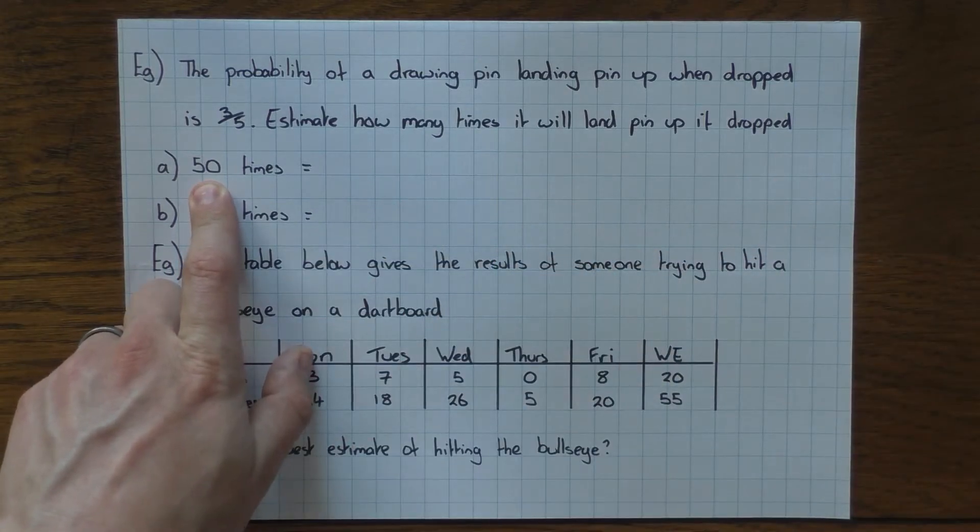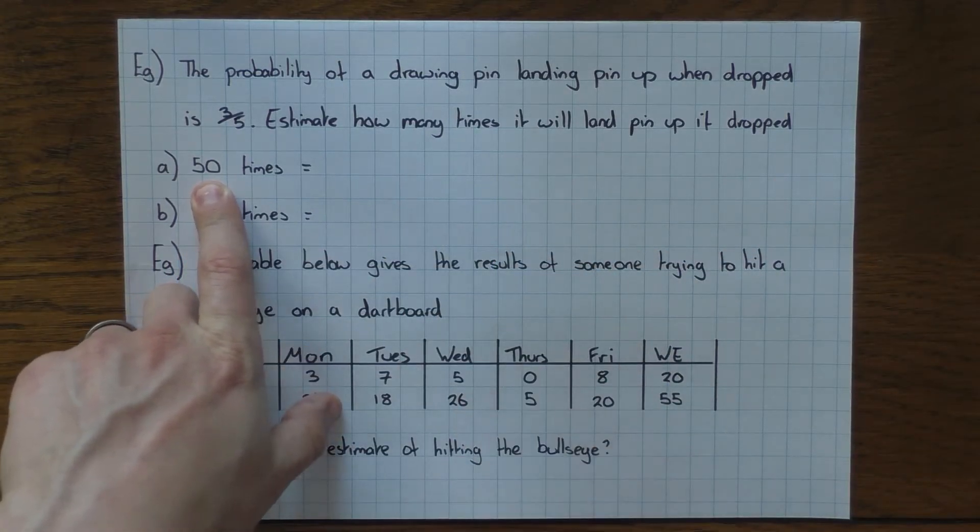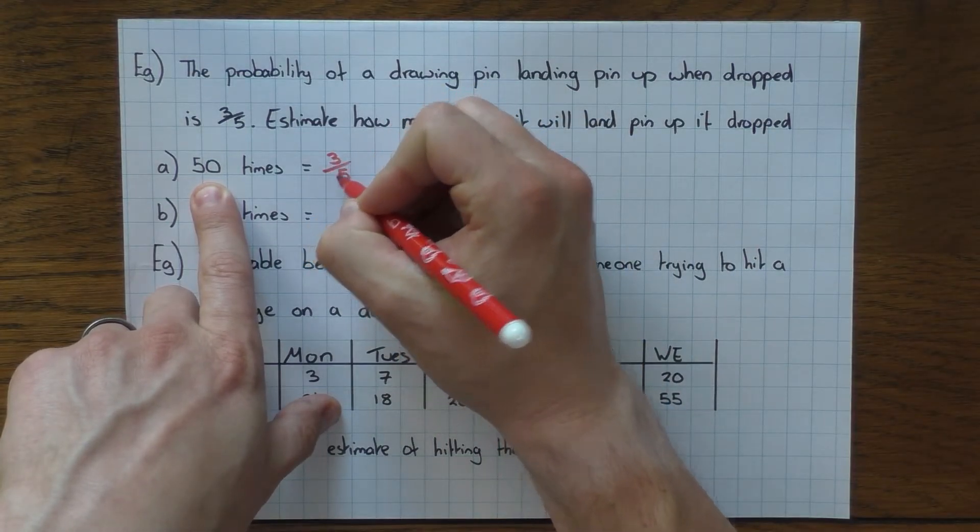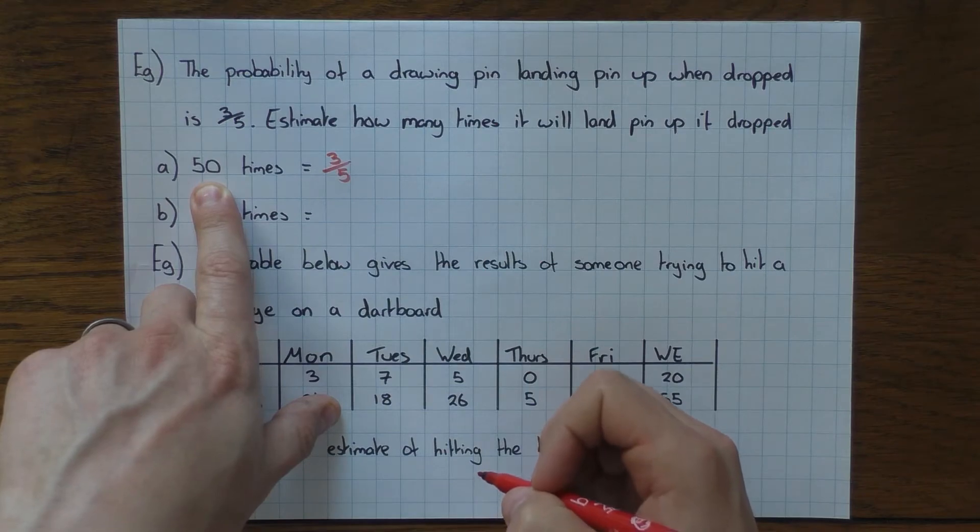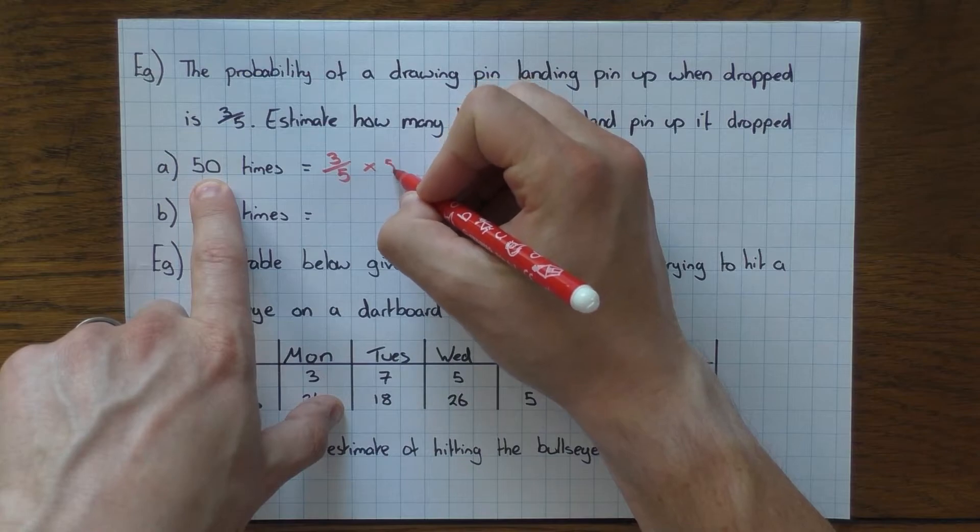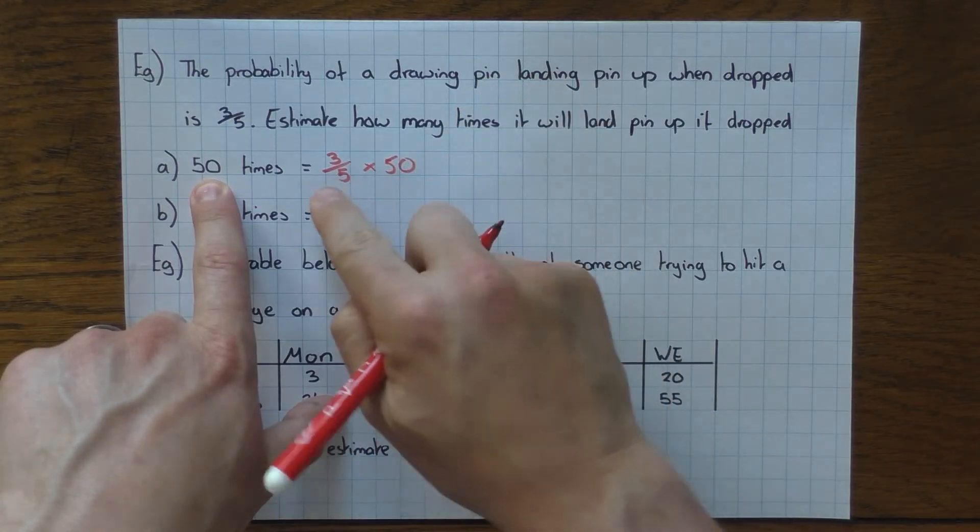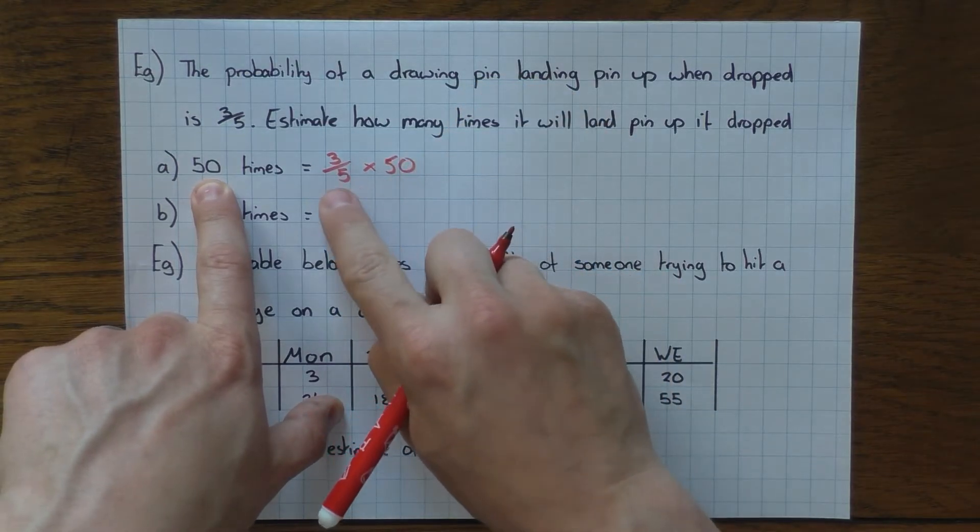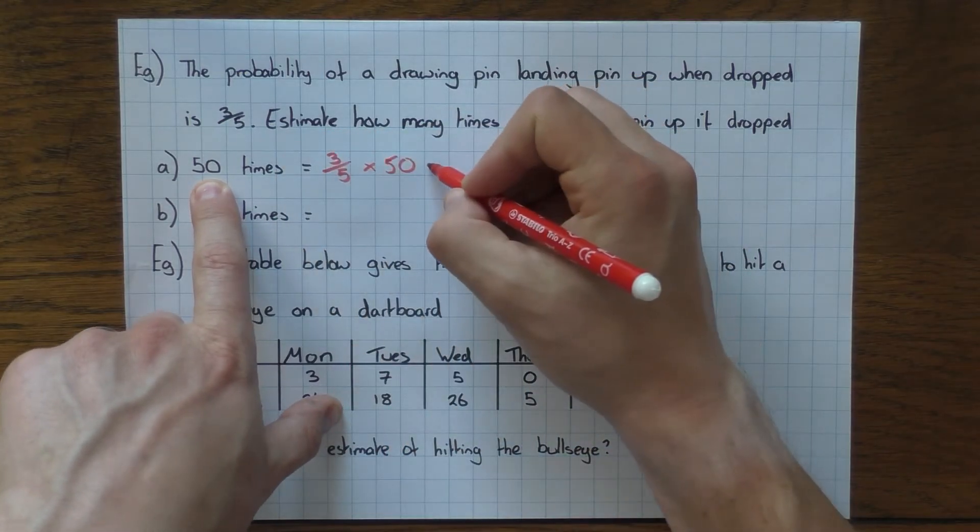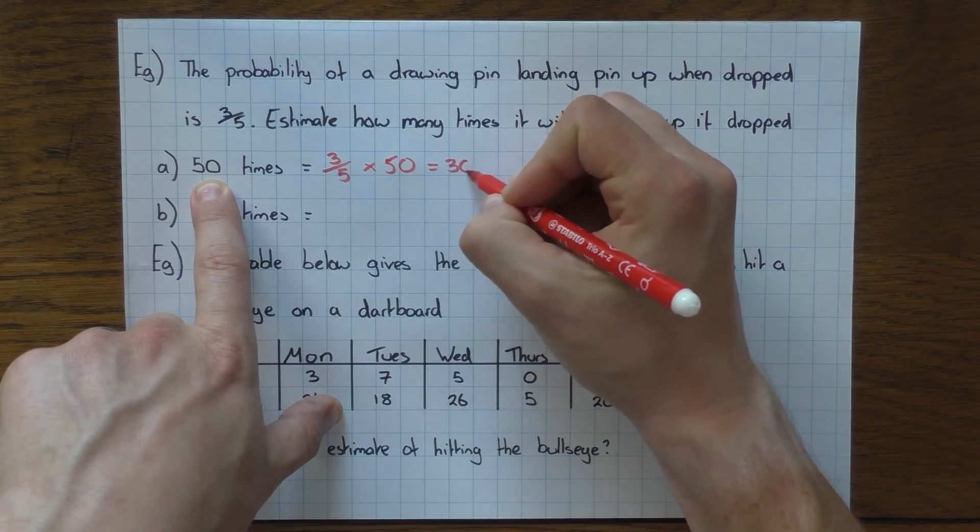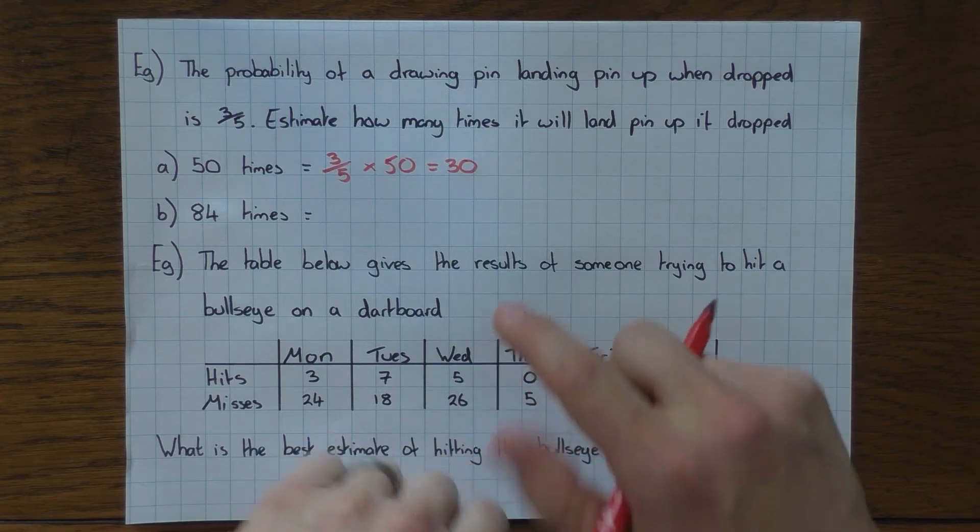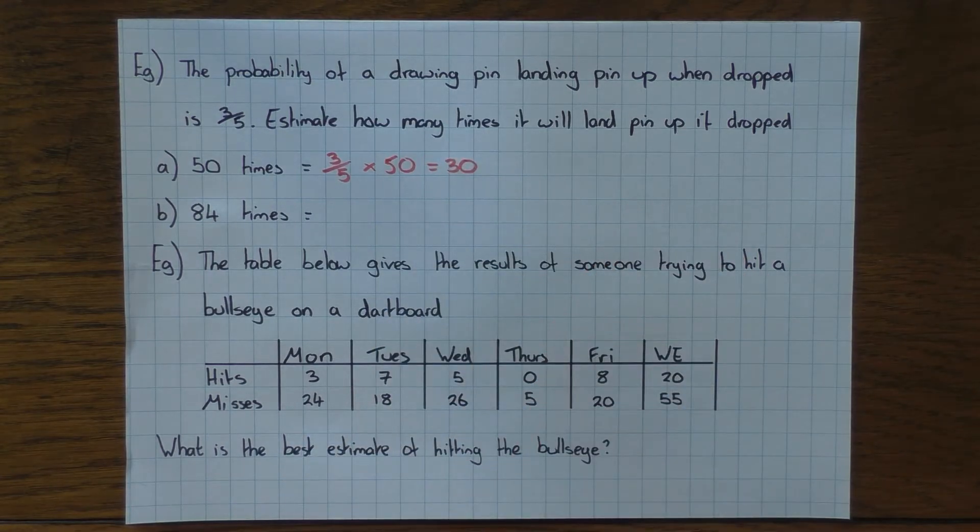Estimate how many times it will land pin up if dropped 50 times. So this goes back to the third point I made at the start. This is your expected frequency, where we take the probability or relative frequency and you times it by how many times you are going to do it. In this case, basically times by 50. So three fifths times 50, so just finding a fraction of an amount. 50 divided by 5 is 10, times by 3 is 30. So that'll probably be a non-calculator. So if I was to do this experiment 50 times, I'd expect to see it 30 times.